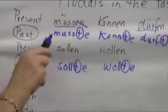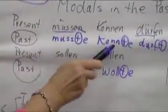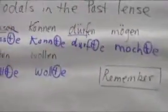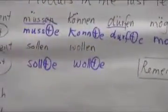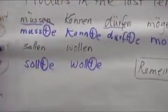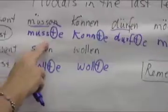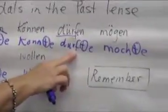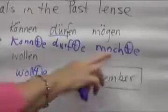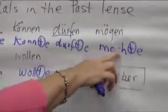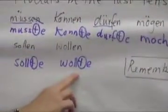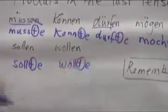So how do we pronounce them? Musste, konnte, durfte, mochte, sollte, wollte. So he/she/it: he had to, he could, he was allowed to, he liked, he should, and he wanted to. These are the translations of the past tense modals.